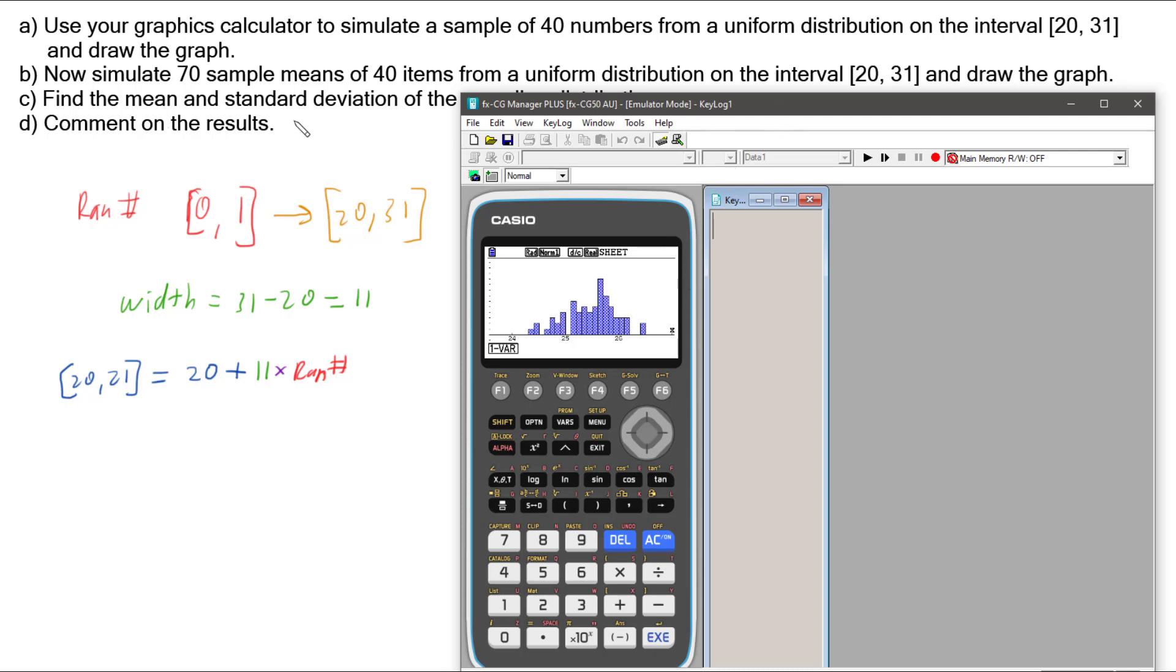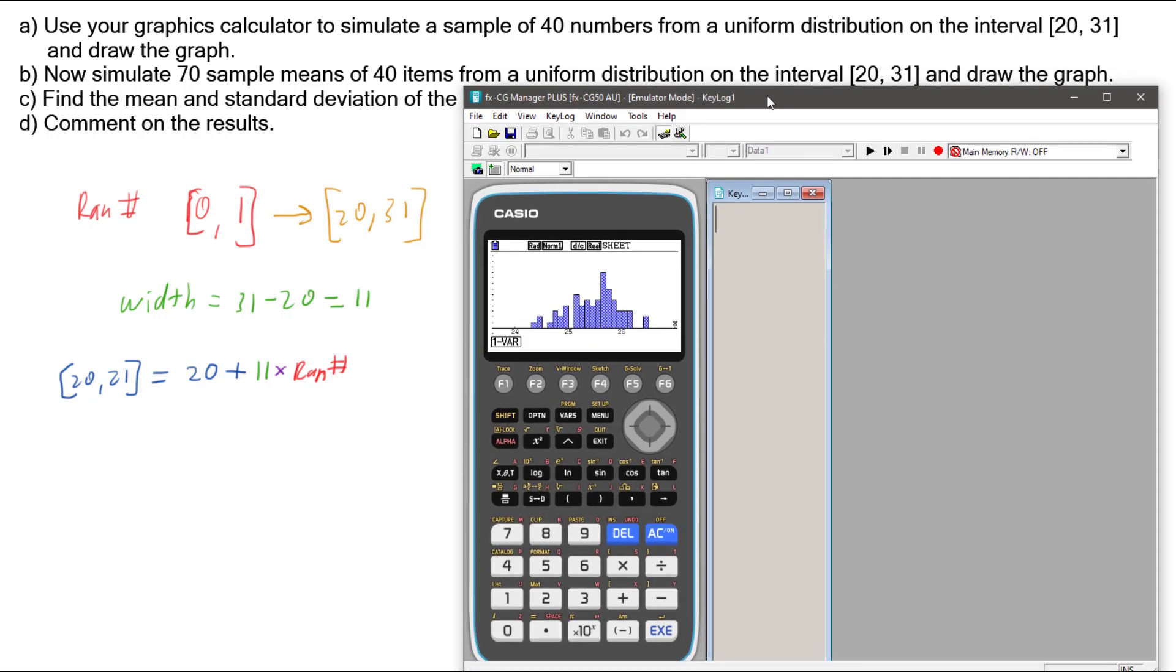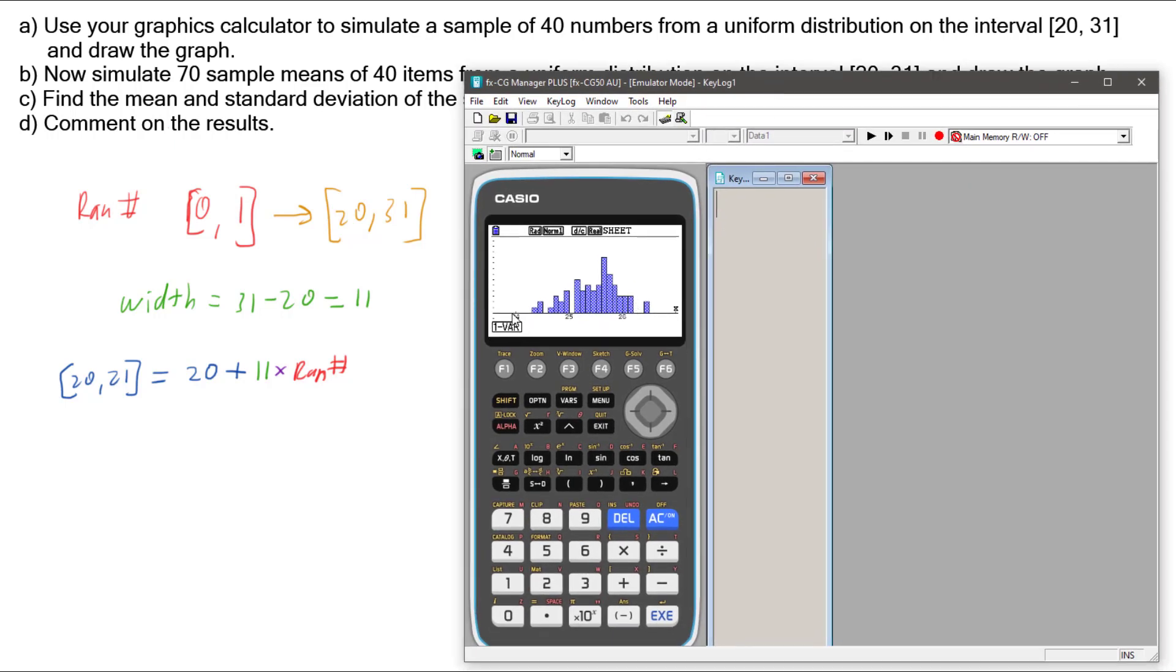Now we can do part C, which is to get the mean and standard deviation. We have our one variable statistics available from our graph right here. We can go F1 and get our one variable statistics. We can see that our samples gave us a sample mean of 25.47, and a sample distribution, which is the sx, to be 0.4645. So we can get using our data, our spreadsheet, even some statistics from our sampling distribution.